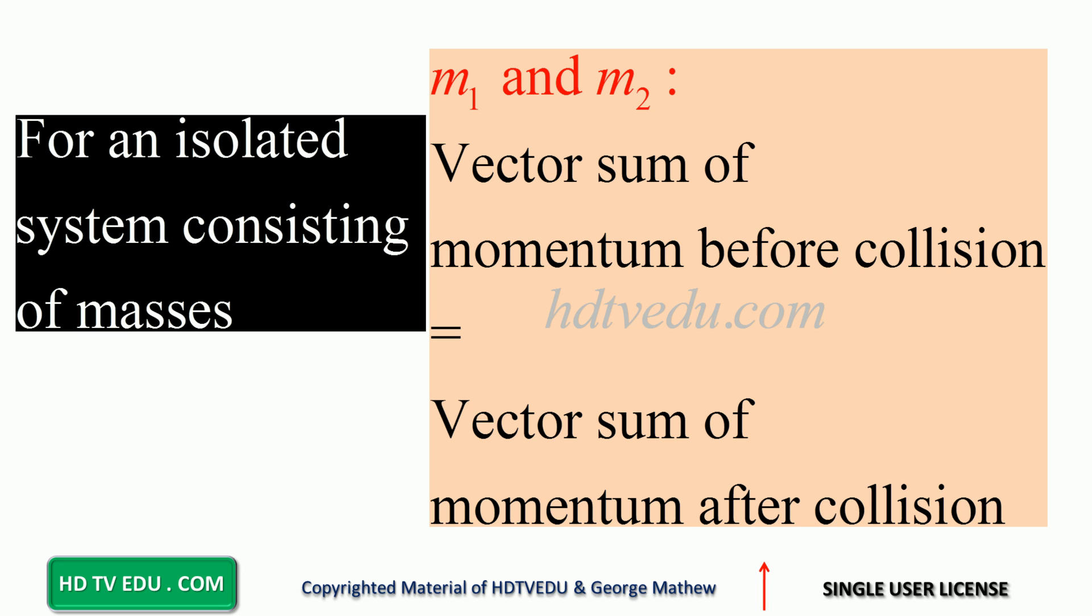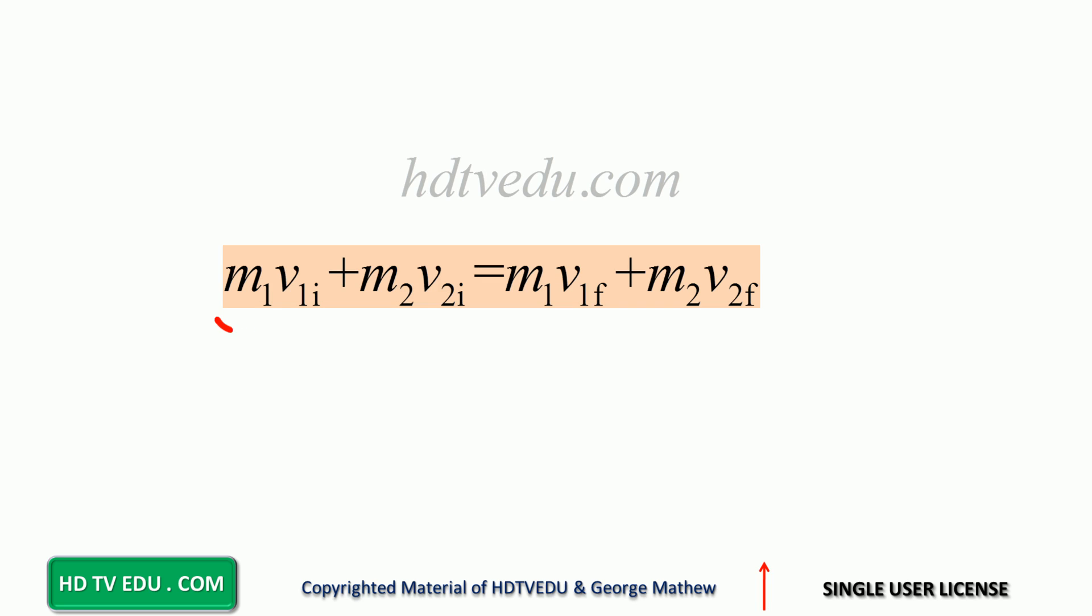For an isolated system consisting of masses m1 and m2, the vector sum of momentum before collision equals the vector sum of momentum after collision. For an isolated system, net force is zero. If net force is zero, momentum before should equal momentum after. This is initial, and this is final.